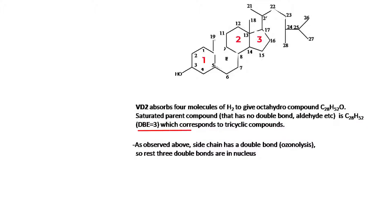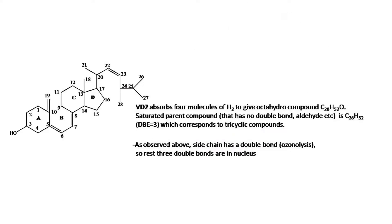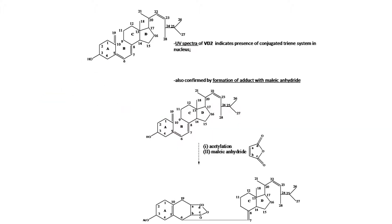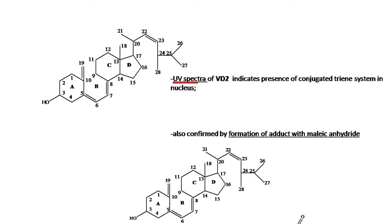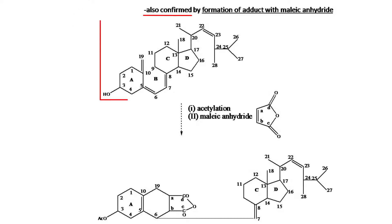The saturated parent compound with no double bonds, aldehyde, etc. is C28H52 with a double bond equivalent of three, which corresponds to a tricyclic compound. As the side chain has one double bond, the remaining three double bonds are in the nucleus. UV spectra of vitamin D2 indicates presence of a conjugated triene system in the nucleus, confirmed by formation of an adduct with maleic anhydride.